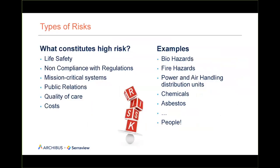What are the different types of risks? What constitutes a high risk in particular? Certainly anything that has any impact to life safety or is in non-compliance with regulation — there could be penalties associated with non-compliance. There might be systems, assets, or equipment that are critical to the overall mission of the organization. Even if something doesn't have the potential to cause harm, it could be a public relations issue or have an impact on the quality of care. It could also be a financial or cost type risk — if we're not compliant, there could be legal or financial penalties. Some examples include managing biohazards or hazardous materials, fire hazards, air or gas, medical gas distribution systems, chemicals, asbestos, lead paint, and all sorts of types of risks.